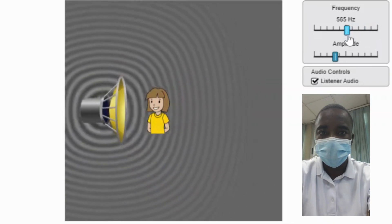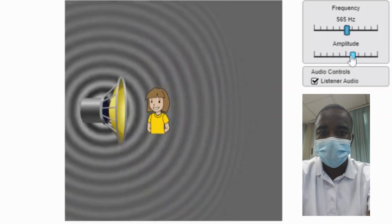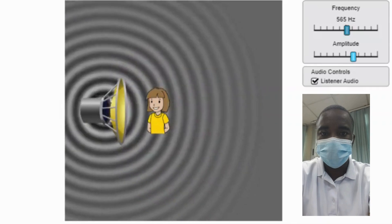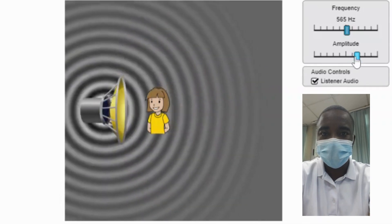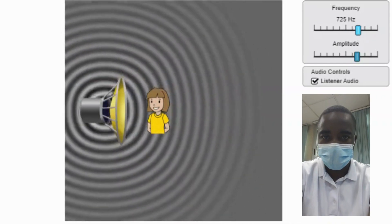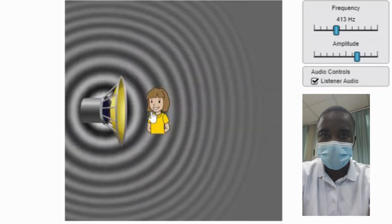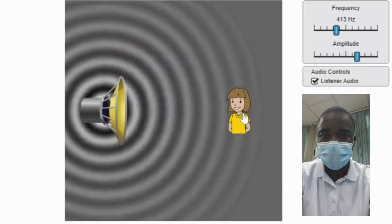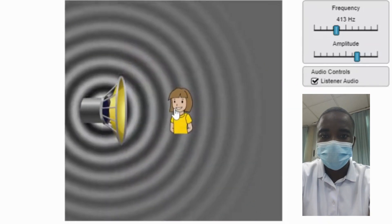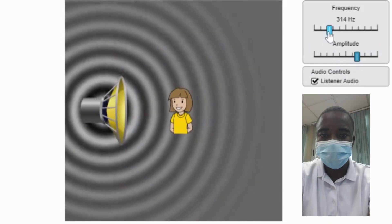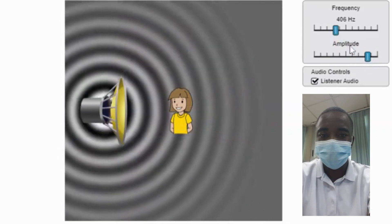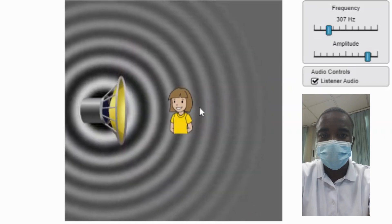The first part of the simulation allows students to explore the relationship between frequency, pitch, amplitude, volume, and wavelength of sound waves. Frequency refers to the number of cycles a sound wave completes per second, measured in hertz, and is directly related to the pitch of the sound. Higher frequencies correspond to higher pitches. Amplitude is the maximum displacement of the particles in the medium from their equilibrium position and is directly related to the volume or loudness of the sound. Higher amplitudes result in louder sounds. The simulation enables students to adjust the frequency and amplitude of sound waves and observe how these changes affect the pitch and volume of the sound.